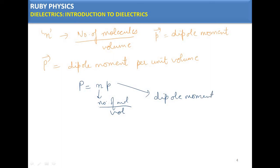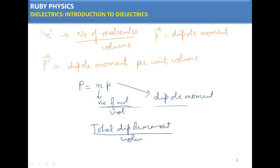Capital P represents total dipole moment divided by volume, which is total dipole moment per unit volume. This is also called polarization density. Small n is the molecule density — number of molecules per unit volume. Small p represents dipole moment of a molecule, and capital P represents polarization density, i.e., dipole moment per unit volume.